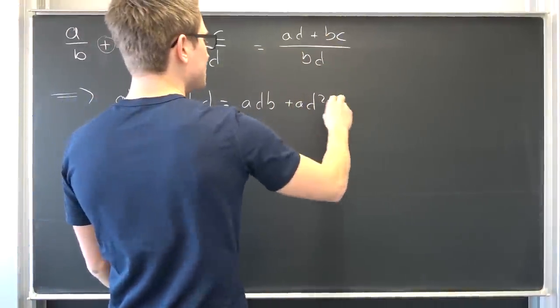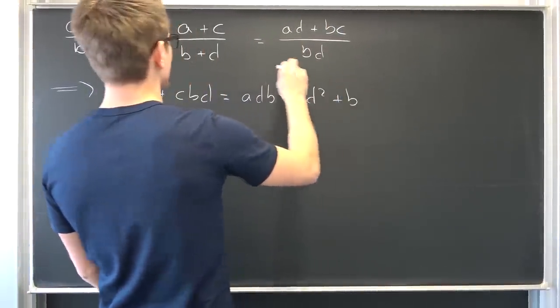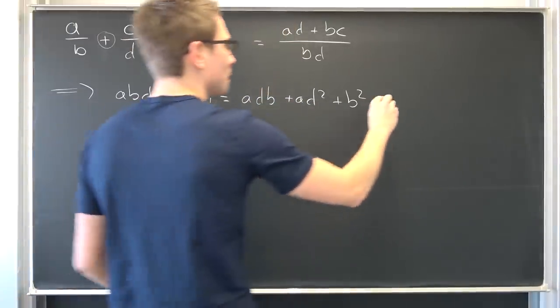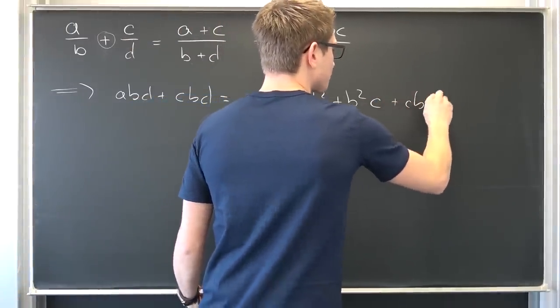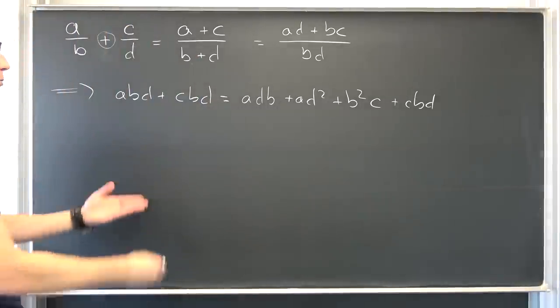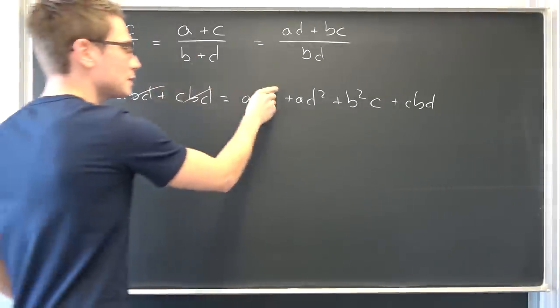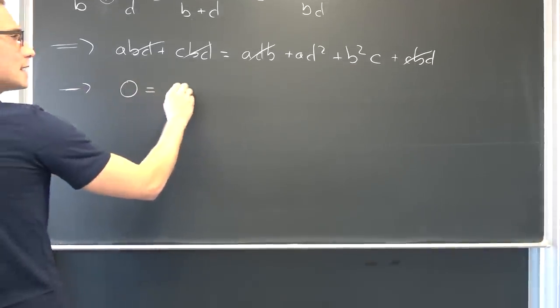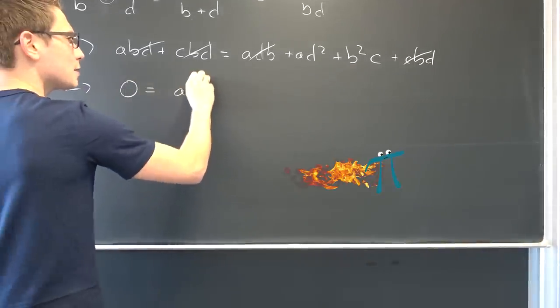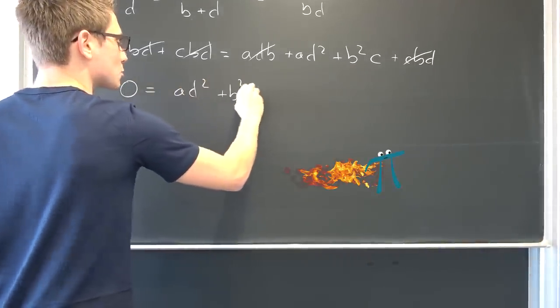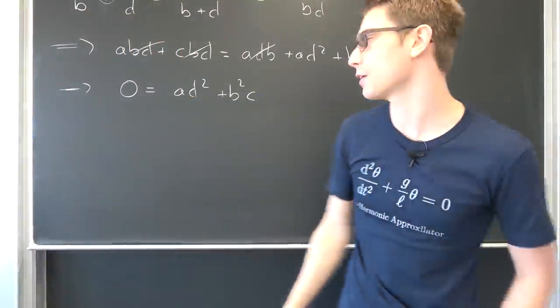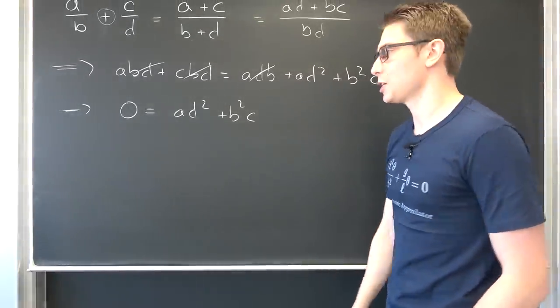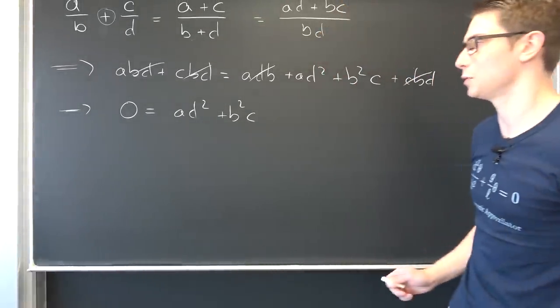Plus ad squared and then we are going to have b squared c and then cbd. Now we can subtract on both sides and we are going to end up with the simple relationship that zero is equal to ad squared plus b squared c.